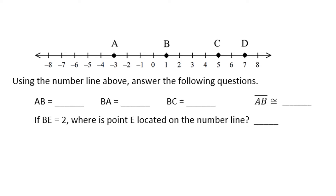Using the number line above, answer the following questions. How long is AB? You count the units — one unit is the space between the tick marks — two units, three units, four units. So AB is four units long. And what about BA? As we remember from previous instruction, AB and BA are the same segment, so they both have length four.